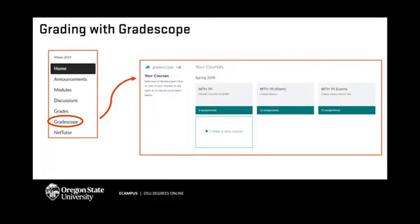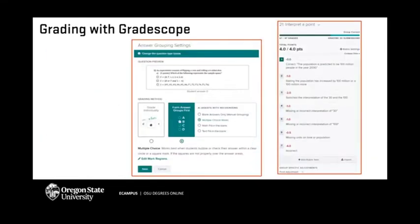Gradescope is a great tool for grading exams and we used it a lot even before going remote. We're thankful that Oregon State has a site license for Gradescope, which means it's integrated into our LMS menu. There's a Gradescope button in our Canvas course menu, and when students click it they're brought to a dashboard that looks very similar to Canvas — so it's not a big transition for students.